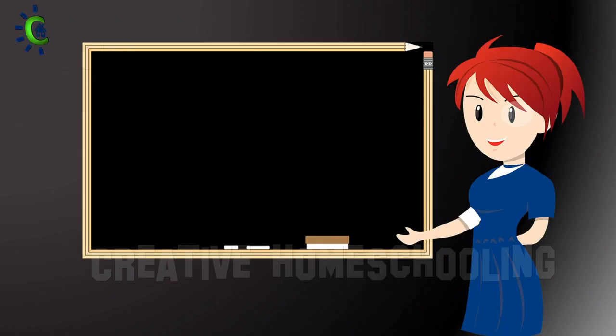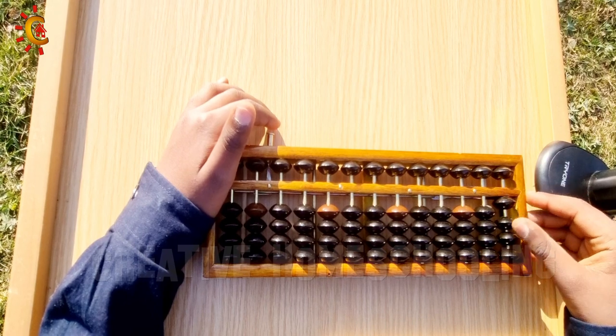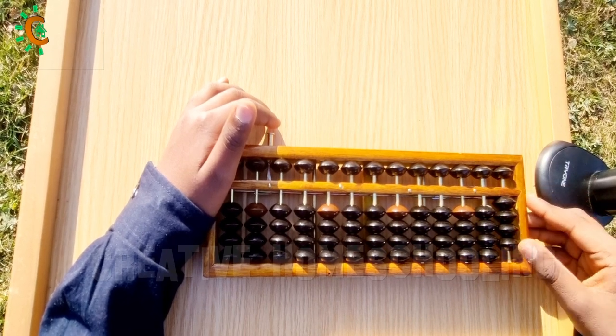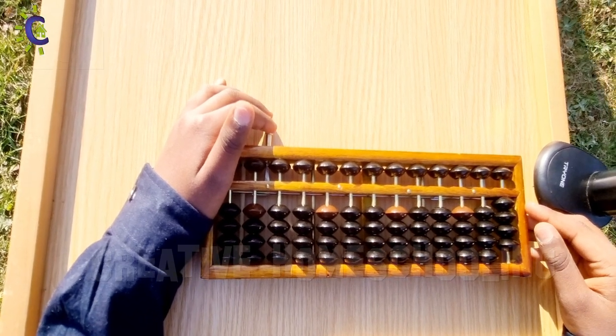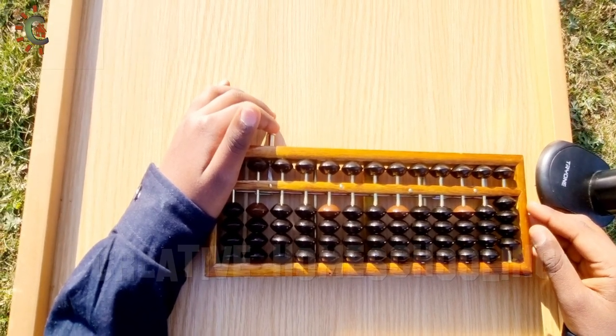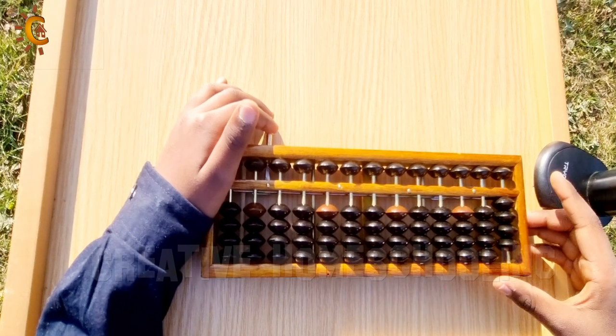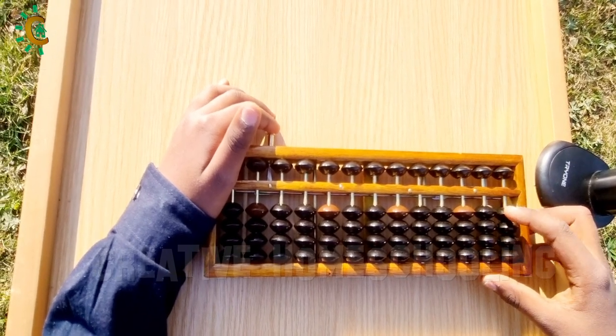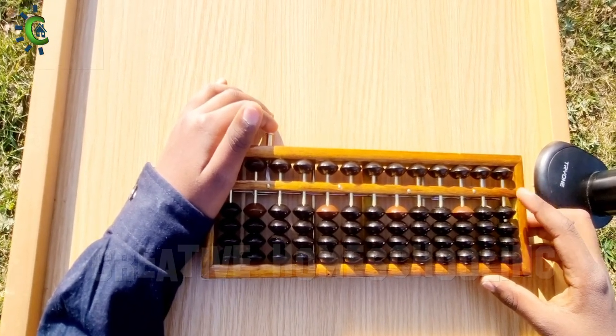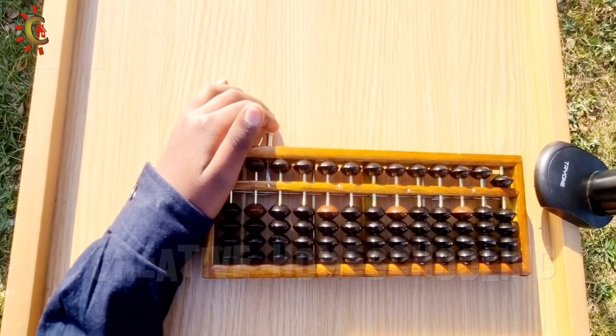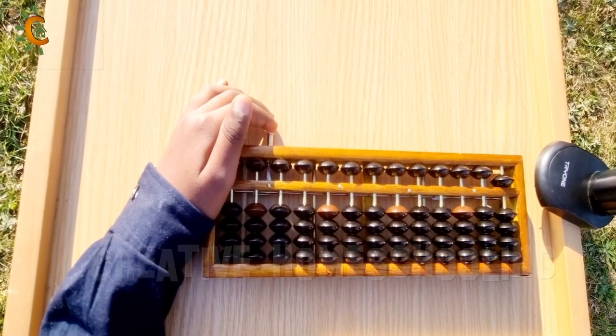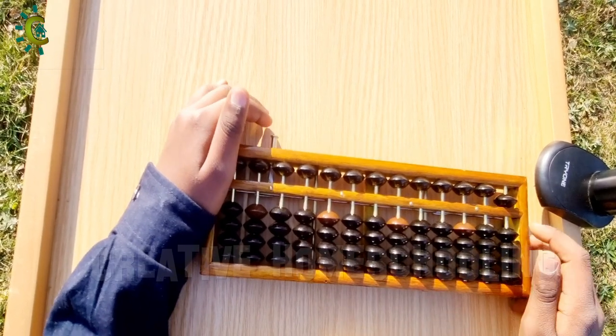Here, you might be wondering how to set the value to 5, as there are only 4 beads below the beam. It's very easy. This is why we have the upper beads. First, reset the abacus to 0 position. Then move this upper bead down. That's 5. Very simple, isn't it?